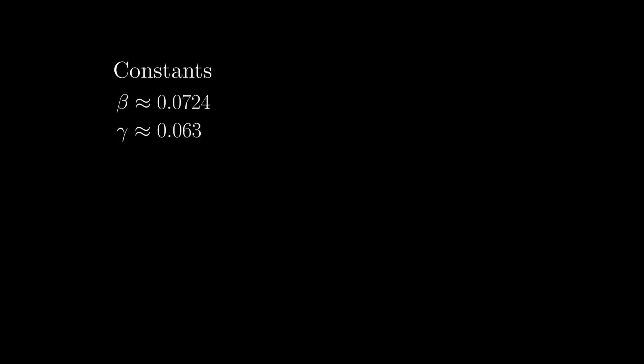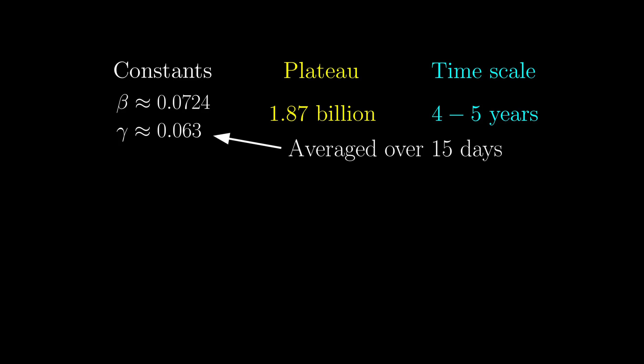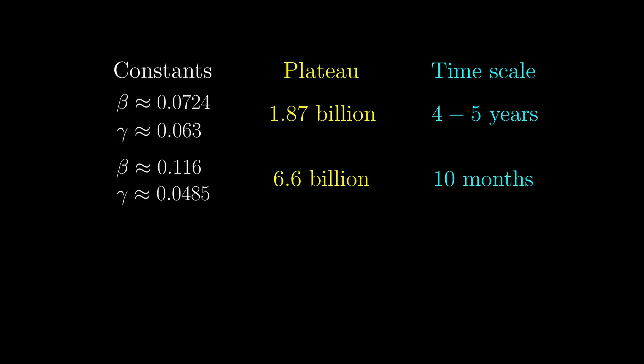These so-called constants beta and gamma are super important in the entire model. We took this set of constants, and we end up with a plateau of 1.87 billion within a timescale of around 4 to 5 years. This set of data we obtained is the average of the betas and gammas we get over 15 days. However, if we look at the most recent data averaging over much shorter time, we get this set of more horrible constants. The reason why it is more horrible is that the plateau is at 6.6 billion, and the timescale is at around 10 months from now.